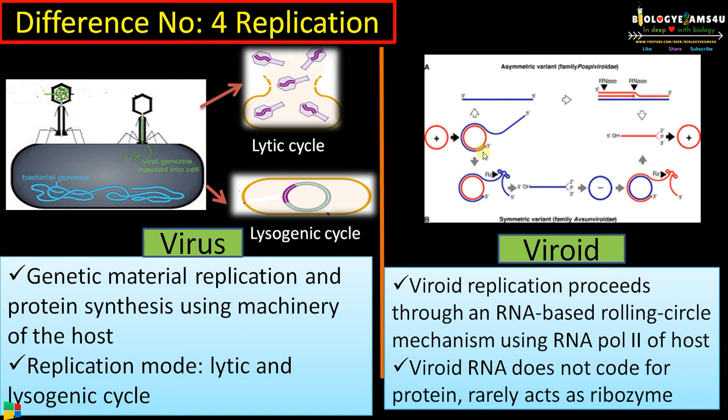RNA polymerase is an enzyme involved in the formation of RNA from DNA during transcription. Viroid RNA does not code for any protein. In some cases, some viroids act as ribozymes — RNAs with catalytic activity — that help in the replication of that viroid.